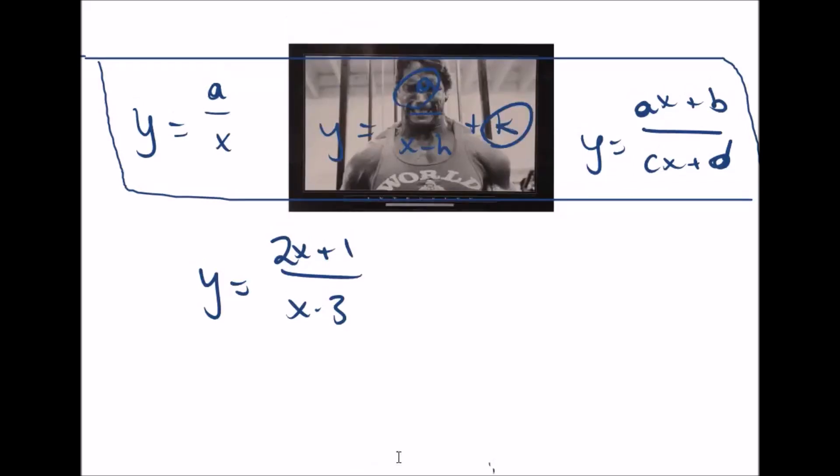So in this last case, y equals ax plus b over cx plus d, two is the a, this one is the b, c, there's an invisible one there, we don't need to write that in, but you should know, and the d is negative three.